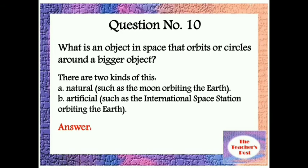Question number 10: What is an object in space that orbits or circles around a bigger object? There are two kinds: natural and artificial.